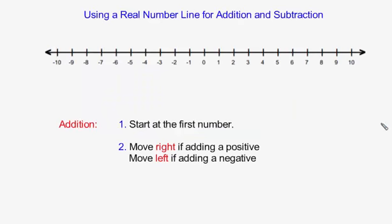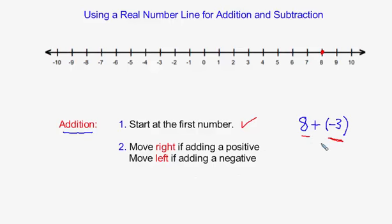Let's take one of the cases where we were adding. To do addition, here are the two steps. I want to do the problem 8 plus negative 3. Step 1: start at the first number, which is 8. Step 2: if the number you're adding is negative, move to the left. Since I'm adding negative 3, I move to the left 3 units — landing at 5. So 8 plus negative 3 equals 5.